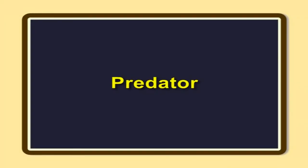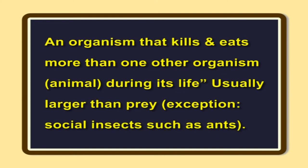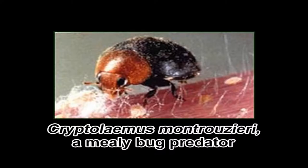Important natural enemies found in mulberry gardens. In mulberry gardens, we come across several natural enemies which contribute a lot in keeping pest populations at low levels. They may be predators, parasites or parasitoids, and even microorganisms. A predator is an organism that kills and eats more than one other organism during its life. Usually it is larger than the prey. Exception: social insects such as ants. Examples: Cryptolaemus montrouzieri and Scymnus coccivora ladybird beetles on mealybug; Blaptostethus pallidus against thrips.